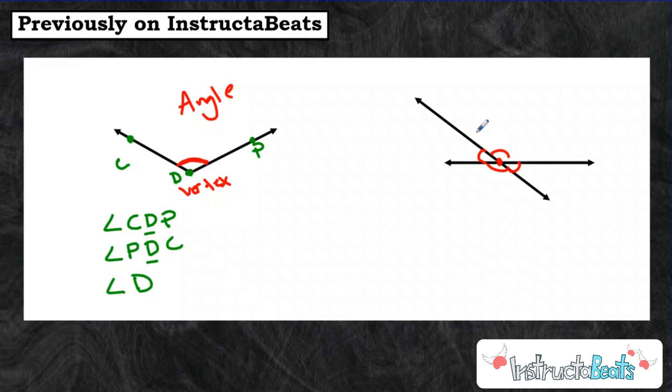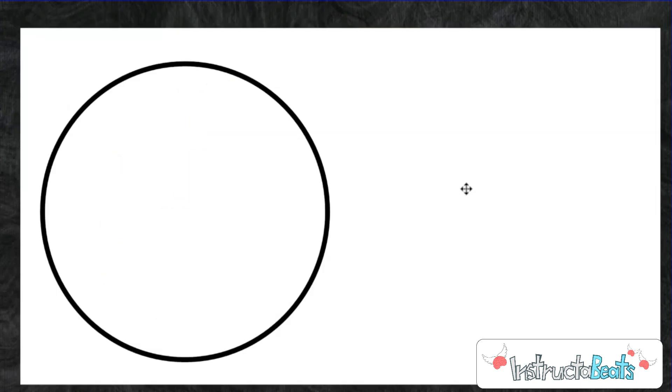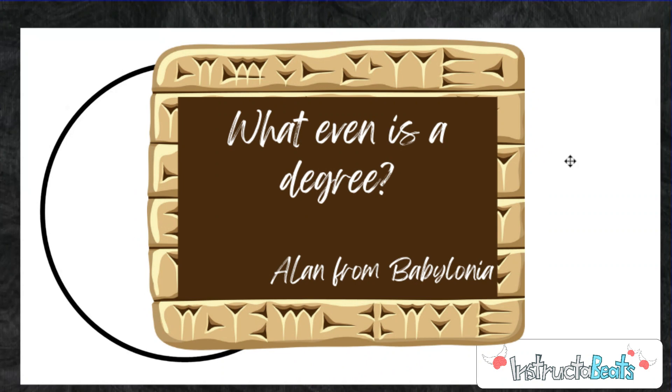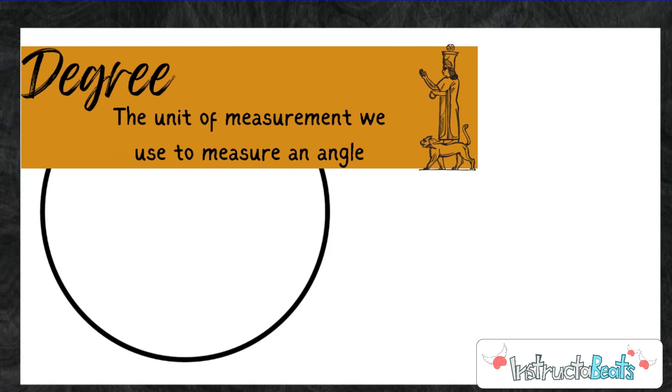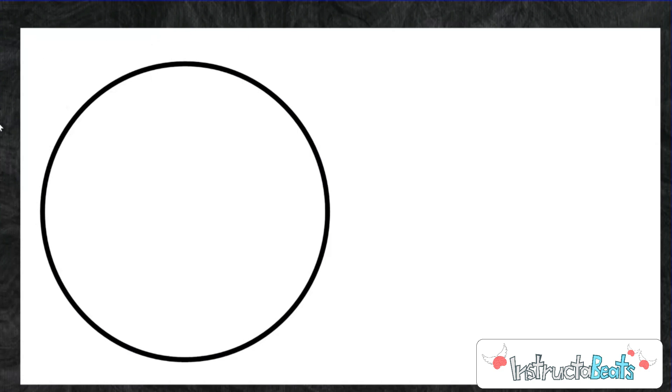Let's take a look at what a degree is, and specifically how we measure the space between these two lines. Alan from Babylonia has sent us a tablet question. Thank you for your wonderful question, Alan. Alan is asking, what even is a degree? Now, Alan, I'm going to answer your question, but first, I'm not sure your English is proper, but you are from an ancient civilization that has impacted our current world in many ways. So I'm going to give you a pass, but now on to your question. So as we've said, a degree is a unit of measurement that we use to measure an angle. It's actually based on a circle. So here we have a circle right here.